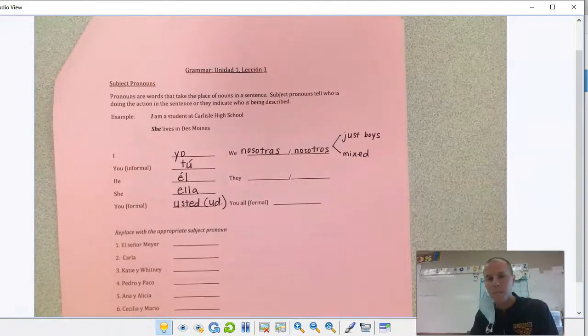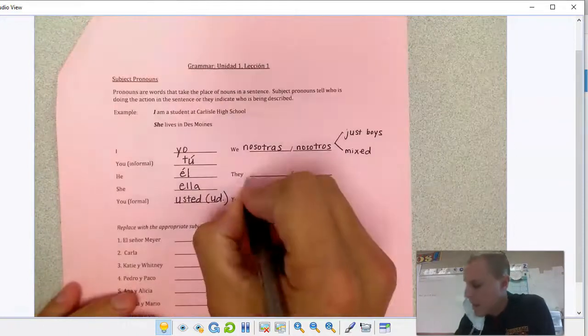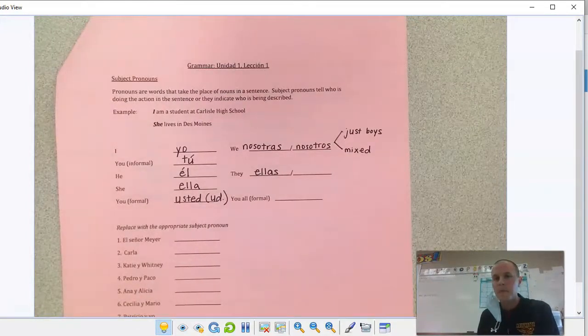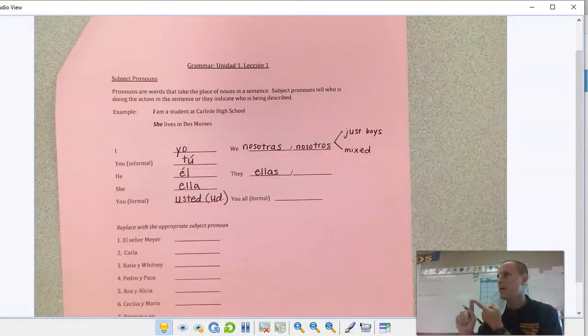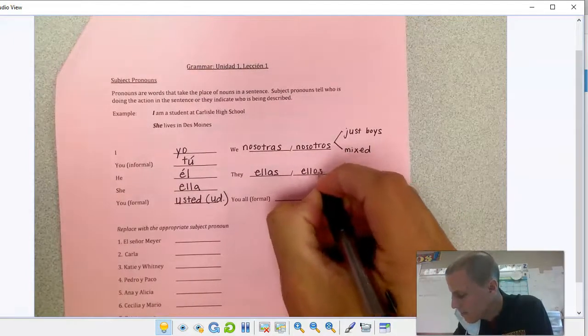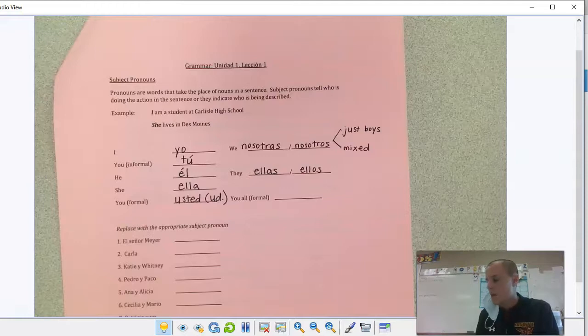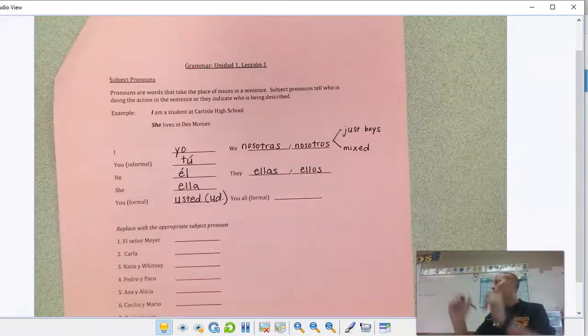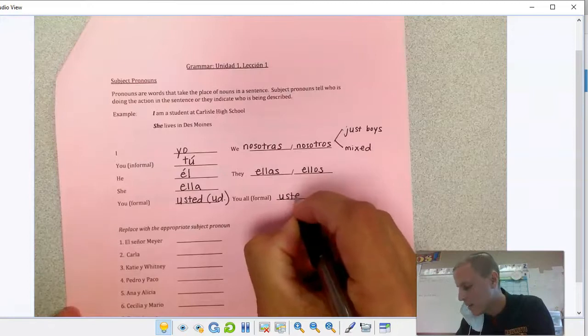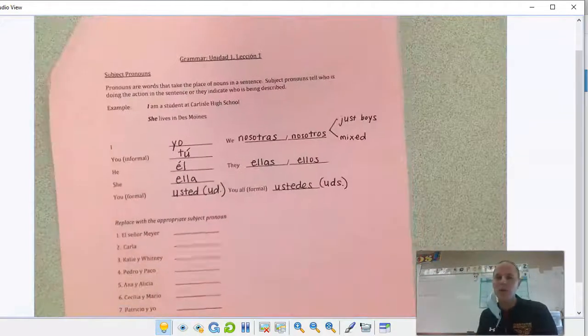If I want to say they, same kind of rules. If it's just girls, ellas, ellas ending. And if it's just boys they, or if it's mixed boys and girls, ellos. Ellas or ellos. And then if I wanted to say you all, ustedes. UDS is what you'll sometimes see for that one shortened.